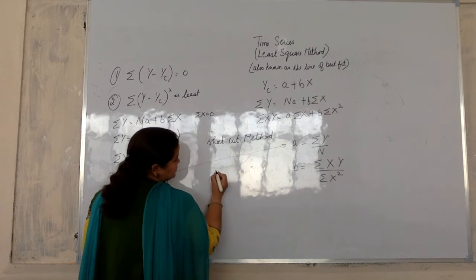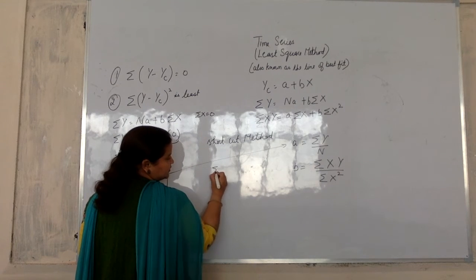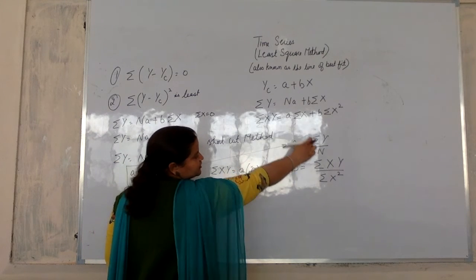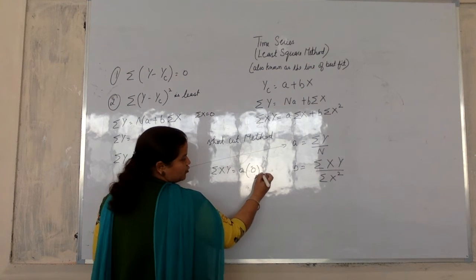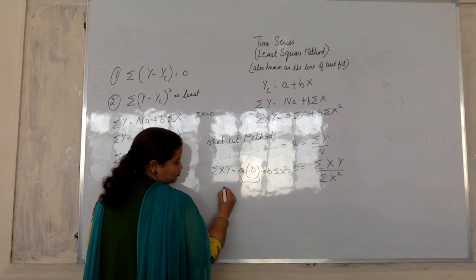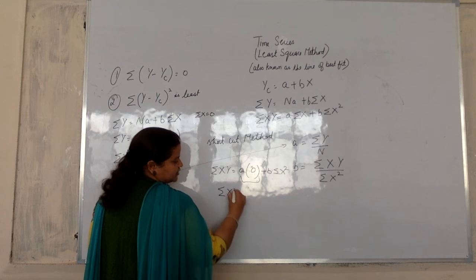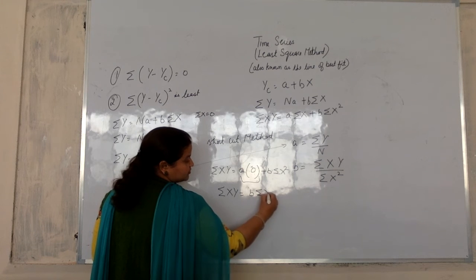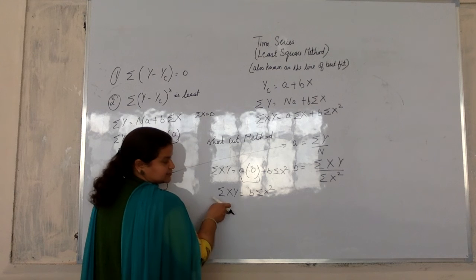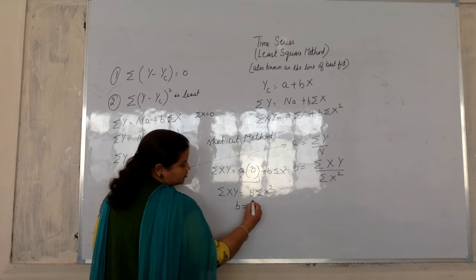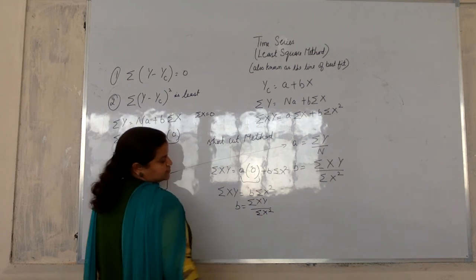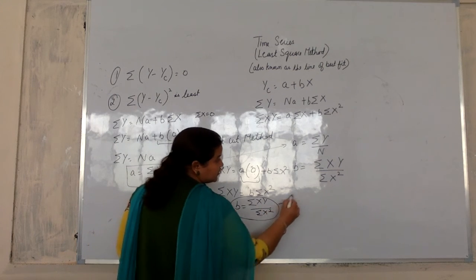The other equation we can do this. Summation xy is equal to a summation x plus b summation x square. The summation x is zero, so summation xy is equal to b summation x square. So in that case, b value find out: b is equal to summation xy divided by summation x square. So this formula is derived.